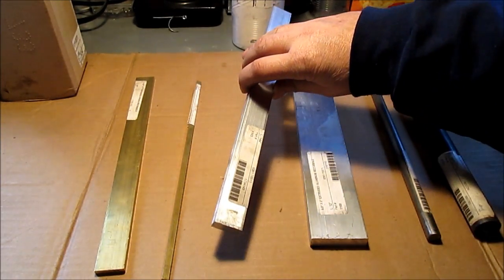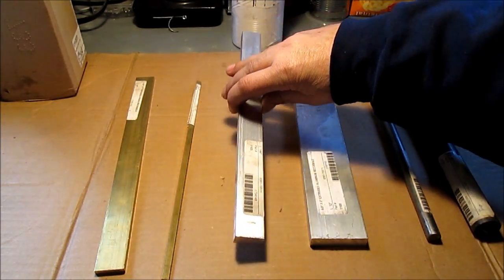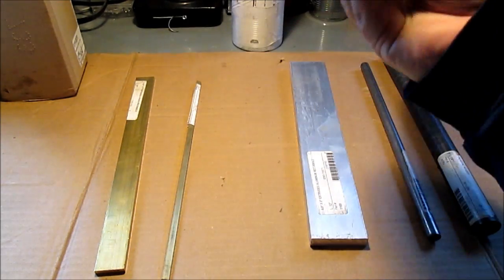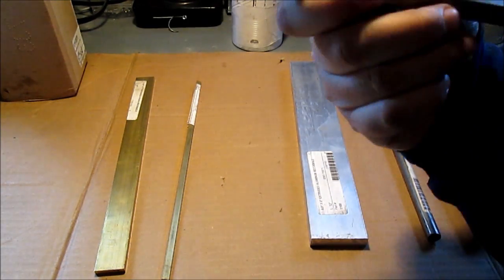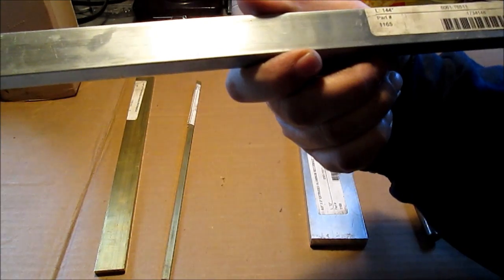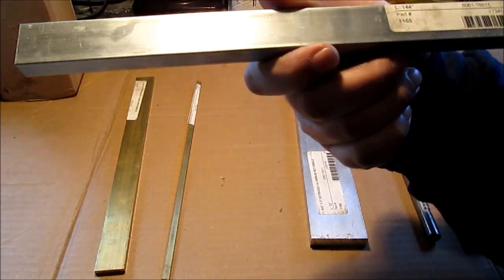This is for projects. 1 inch by 1/2 inch, 2 inch by 1/2 inch. I cannot tell you the type of aluminum. It's 6061 and it has your T6511.